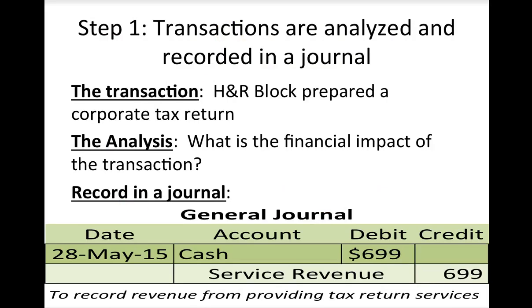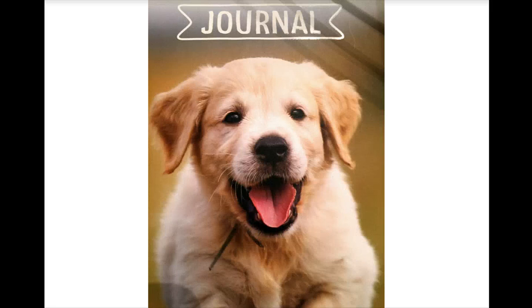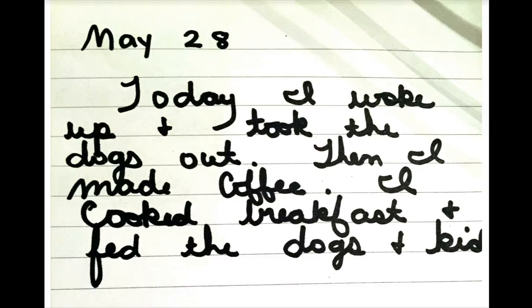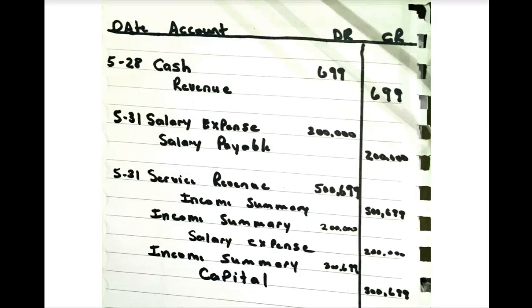That's debits and credits, and you can watch that tutorial at any point. Now let's look more at the terminology in step one. A journal — what do we mean? If I think about a journal for myself, it would be like my diary. For example, May 28: today I woke up and took the dogs out, made coffee, cooked breakfast. The journal for H&R Block is the same thing but records what happened to them financially — cash went up by $6.99 and revenue went up by $6.99. A journal is just a listing of transactions that happened to a company.